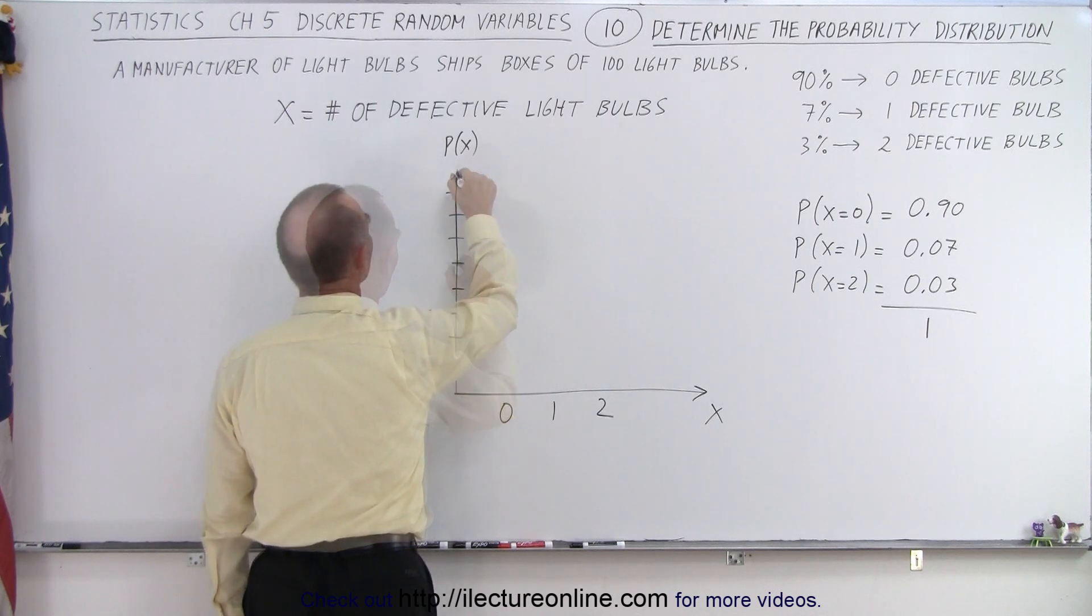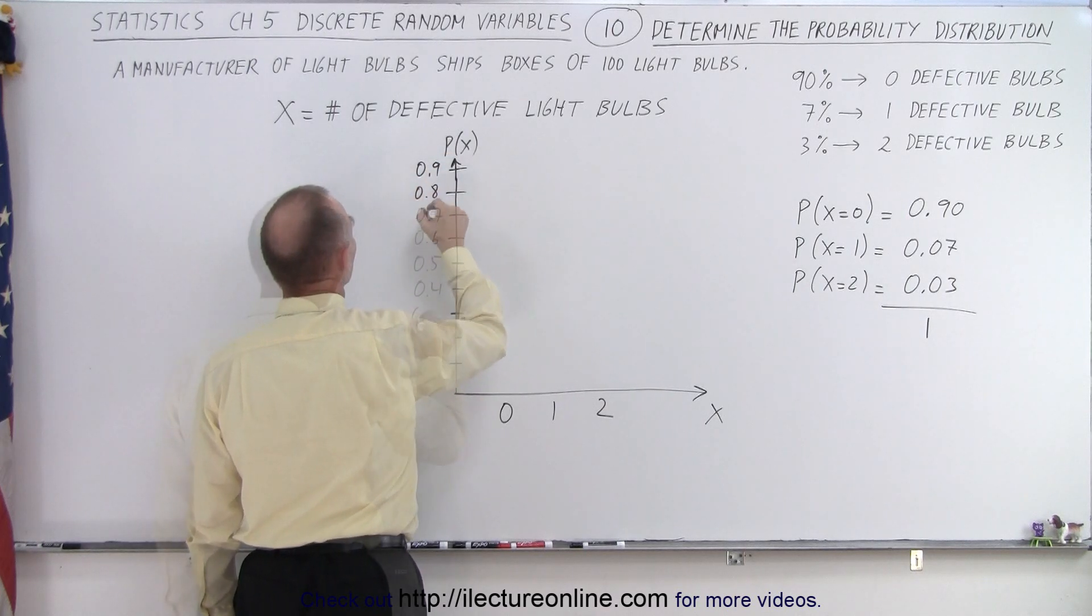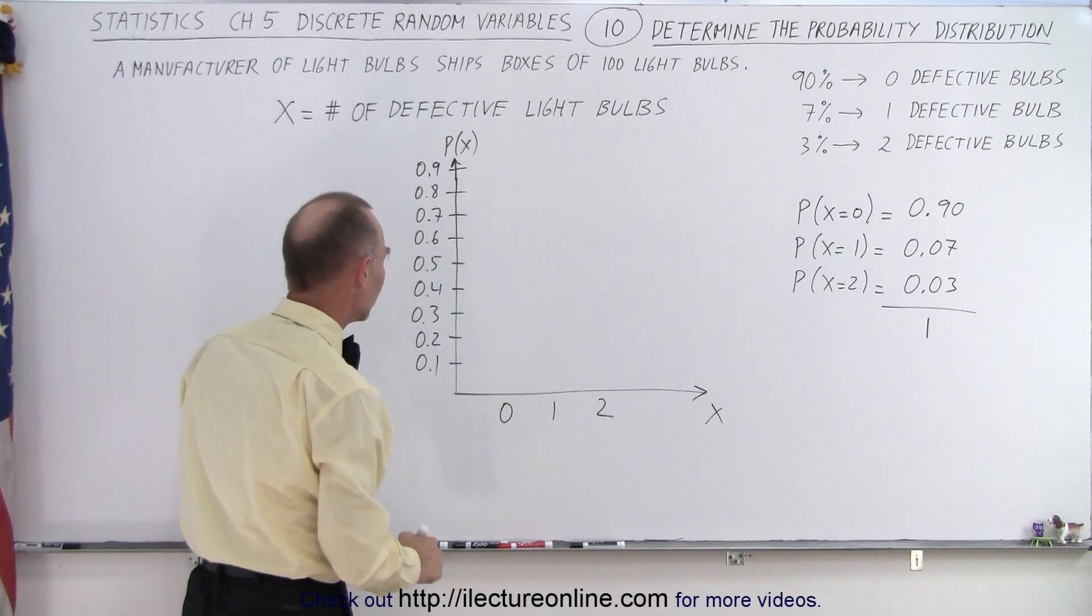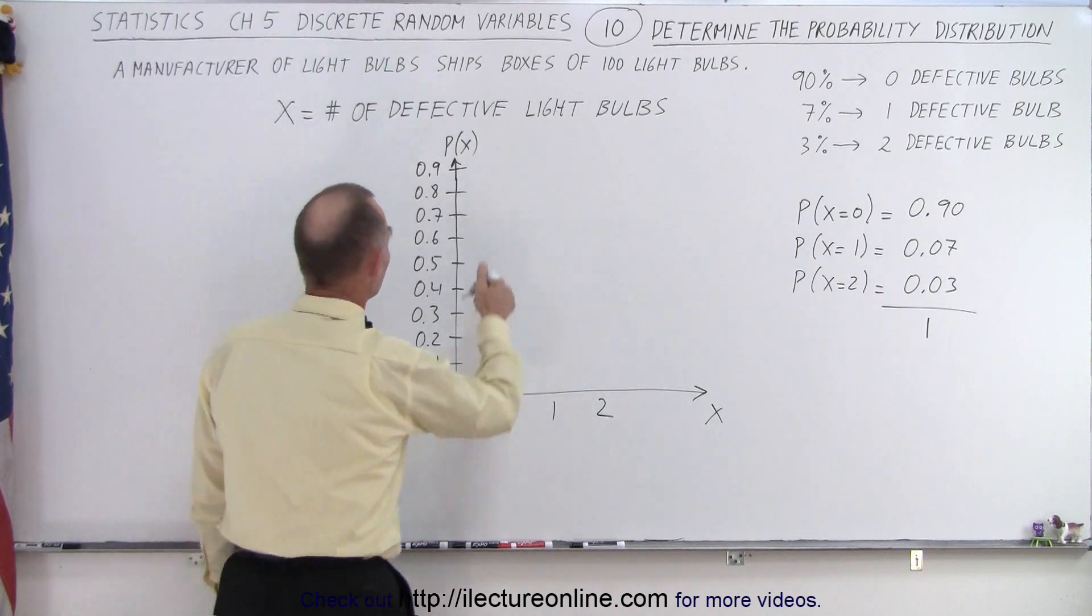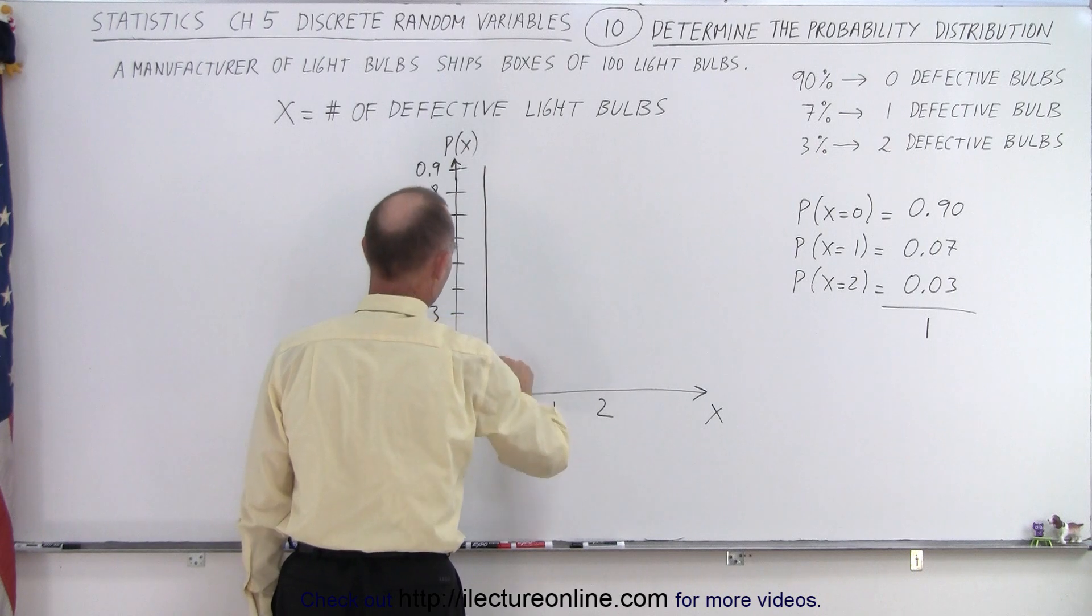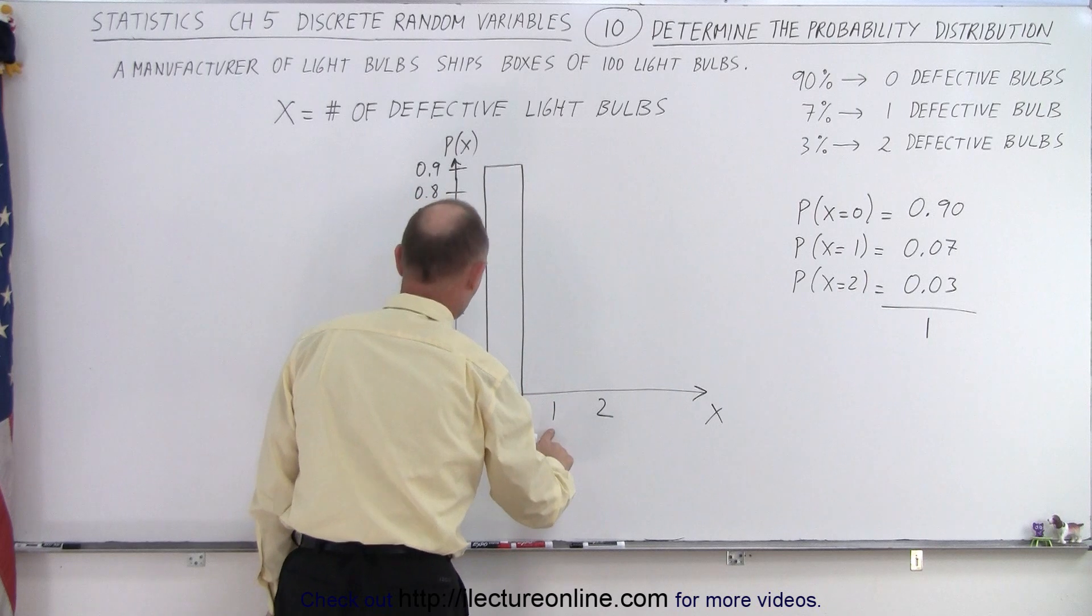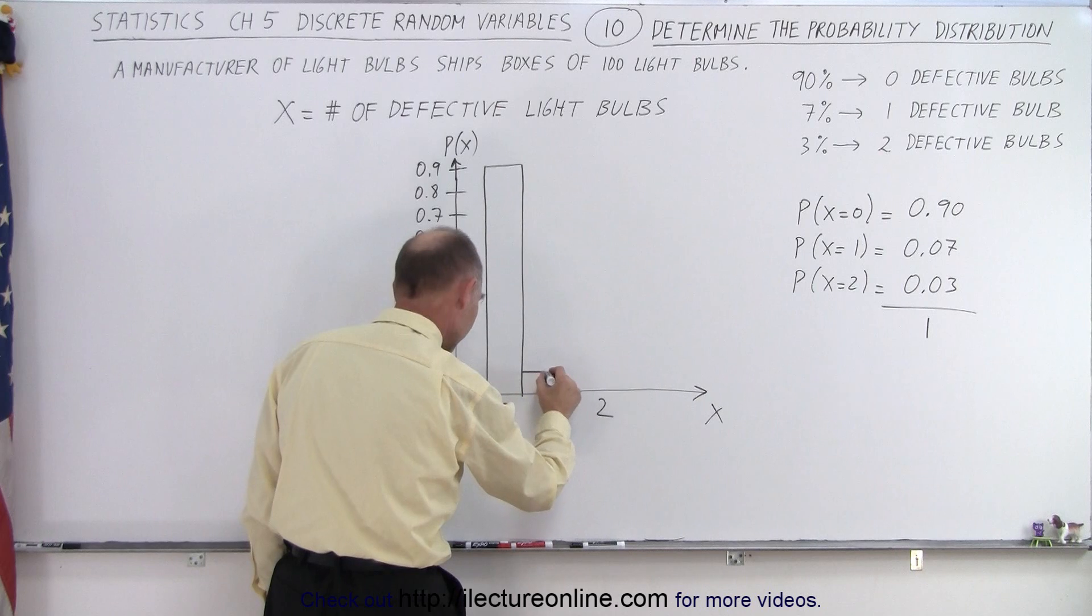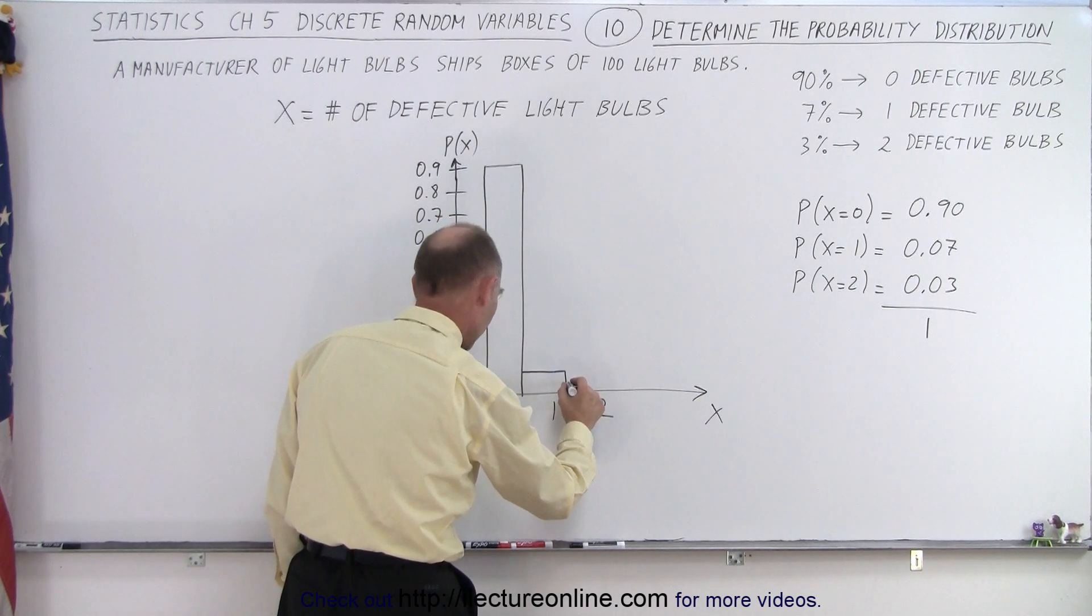0.5, 0.9, 0.8, 0.3, 0.2, 0.1. And then notice that the first bar, because we're going to use a bar histogram, the first one goes all the way up to 0.9. One defective bulb is at 7%, which is 0.07, which is about here. And the third one, where I have two defective bulbs, is at 0.3, which would be about here.